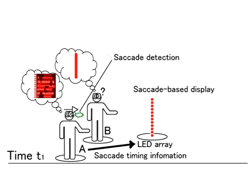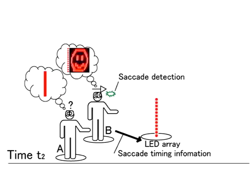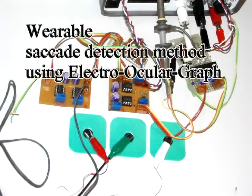For example, consider the situation in which person A and B are observing the display. At time T1, when person A's saccade is detected, a 2D image is presented only for person A by flickering the LED array. On the other hand, person B doesn't move his eye at this time, so he can only see a single array of LEDs. In contrast, at time T2, person B's saccade is detected and only person B can see a different 2D image.